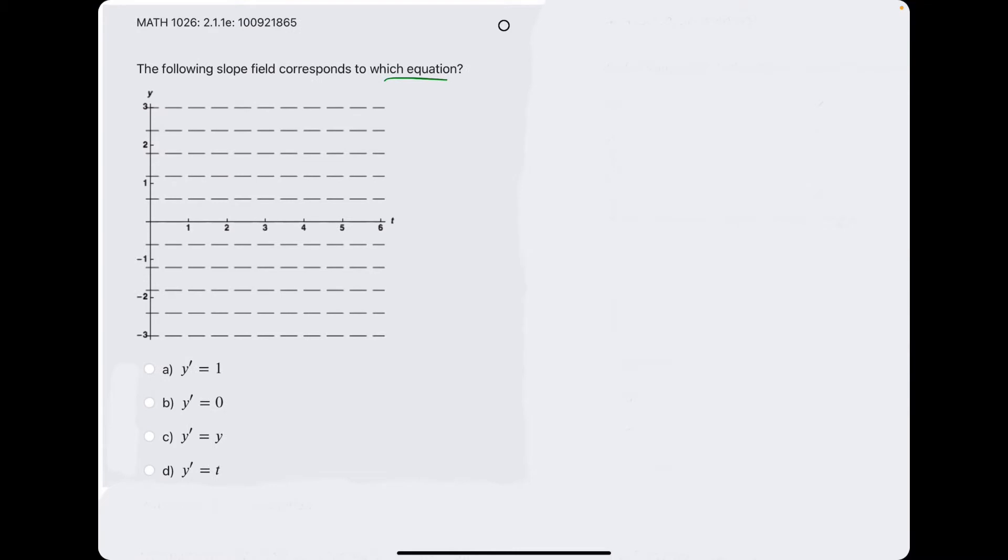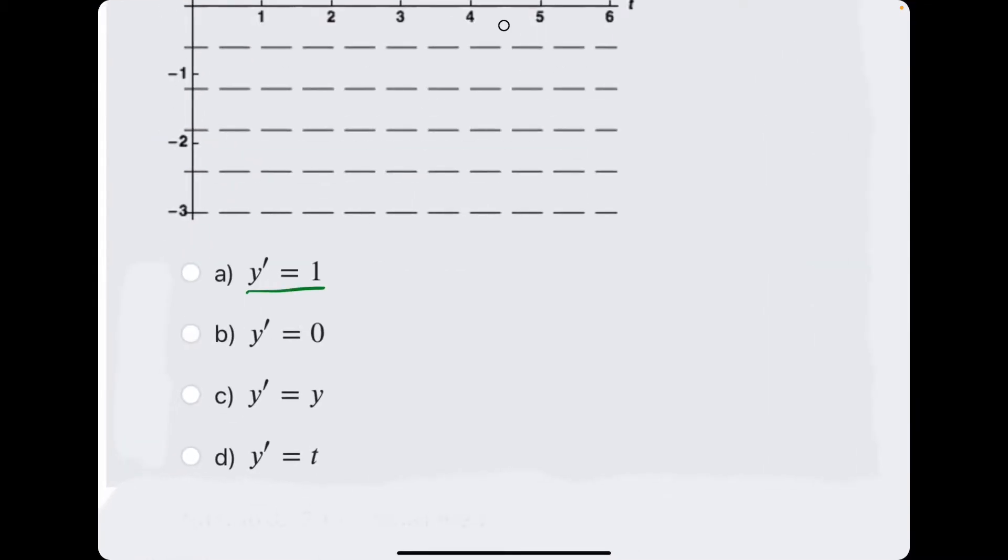So basically, how this works is y prime, the equations given, represent the rate of change of y.